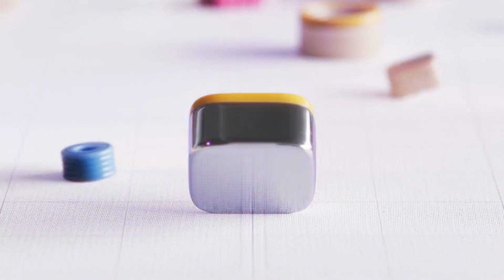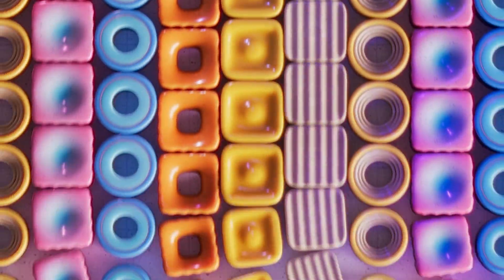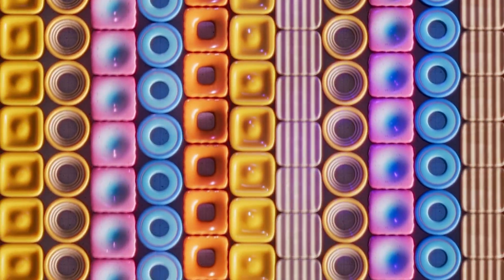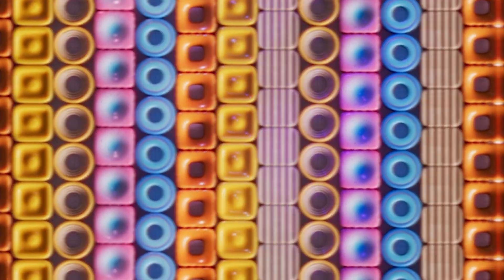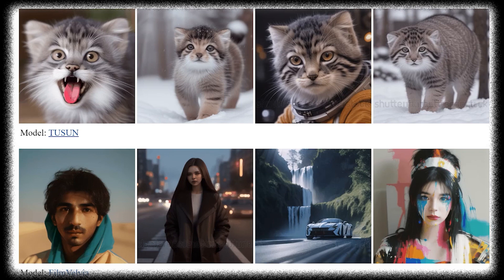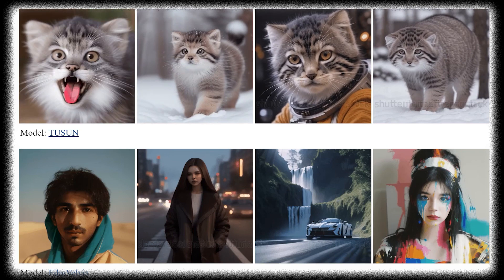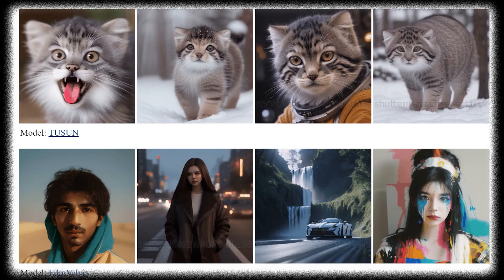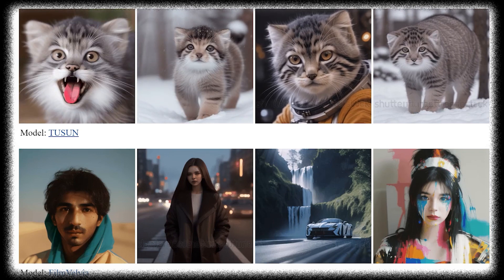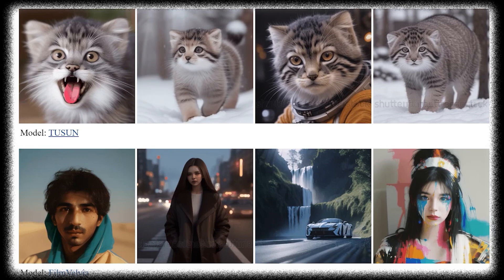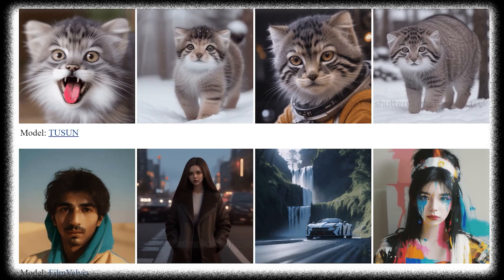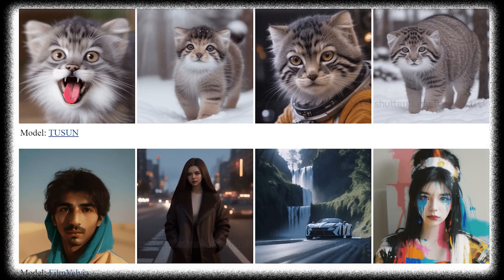After the model has been trained and the motion module has been integrated, the system can generate animations from text descriptions. The text description would need to include information about both the objects in the animation and the motions they should perform.